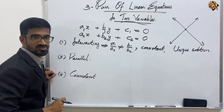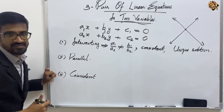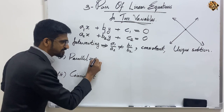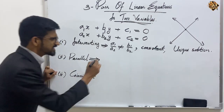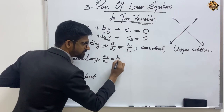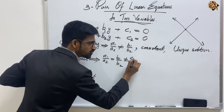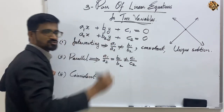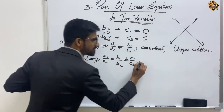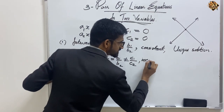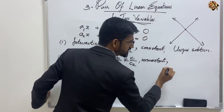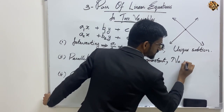If the lines are parallel, then we can say that a₁/a₂ = b₁/b₂ but not equal to c₁/c₂. In this case, the given equations will be inconsistent with no solutions.